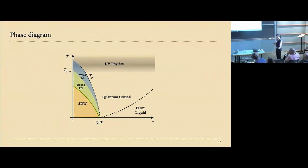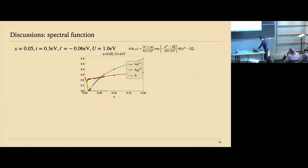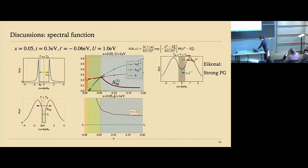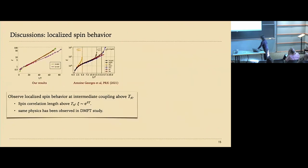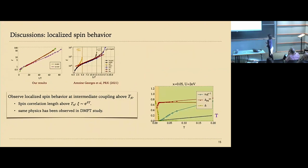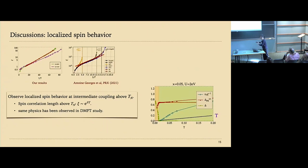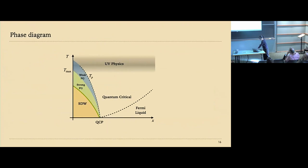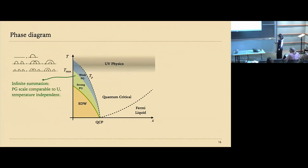An interesting finding is that the temperature in the pseudo-gap region is much smaller than the characteristic fermion energy, meaning we are probing the physics when the thermal de Broglie wavelength is much smaller than the spin correlation length, yet we still see the pseudo-gap feature. In our calculation, the result doesn't explicitly depend on this ratio — there's no sharp crossover. Very close to the Neel temperature there is a small region where the de Broglie wavelength is smaller than the spin correlation length, but over a wide region it doesn't show up prominently.